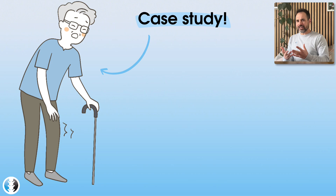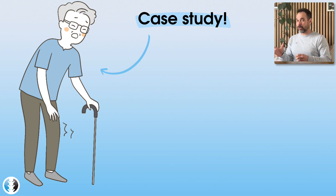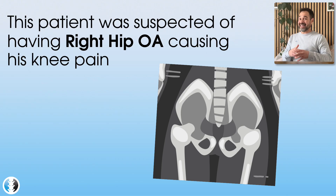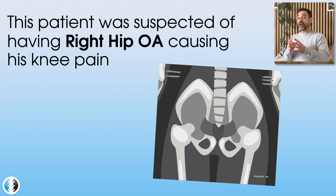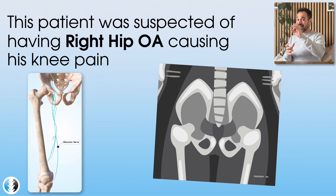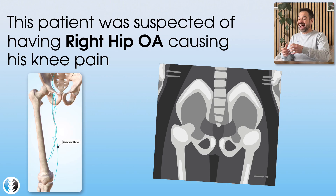Having looked at this patient's assessment, there was more indication of a right hip problem than a right knee problem. As a result, this patient was referred for an X-ray of the right hip, which came back showing relatively significant osteoarthritis of the right hip. This led to the suspicion that the right knee pain was actually referred pain from the right hip osteoarthritis, referred down the obturator nerve, which runs from slightly medial to the hip right down to the medial aspect of the knee.